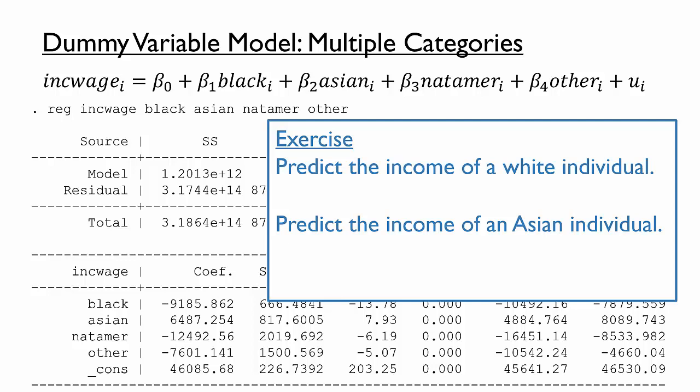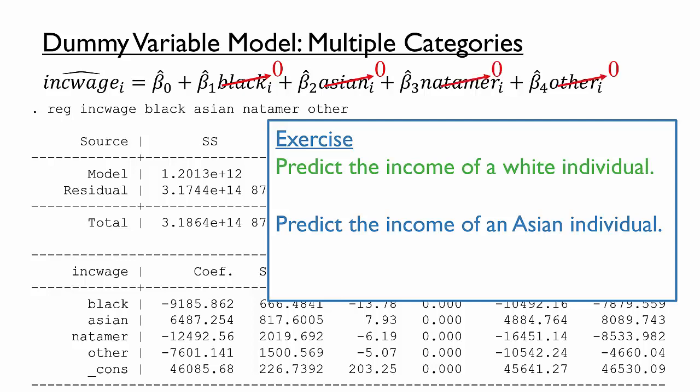As we have done with other models, we make predictions simply by substituting values into variables based on information we know. Let's work from the sample model and start with the predicted income of a white individual. Because the individual is white, he or she is not black, so we can substitute black equals zero. Similarly, the individual is not Asian, Native American, or a member of the other race categories. All terms except beta 0 hat are multiplied by zero, so the predicted income is simply beta 0 hat, the model's intercept. From the model's estimates, this value is $46,086. You have probably already guessed that this means the average annual income of whites in the data set is $46,086.